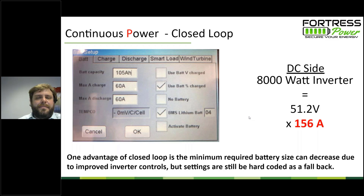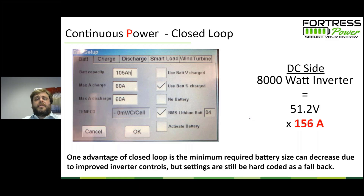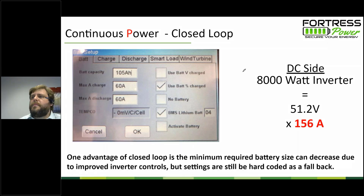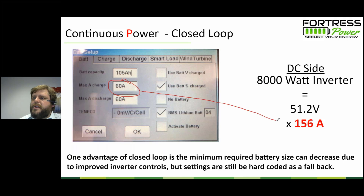They only want a little bit of backup power — not a whole bunch — maybe a couple of hours rather than a full day's worth. One advantage of closed-loop communication is that normally, in our example, if you take a 60 amp-hour battery...